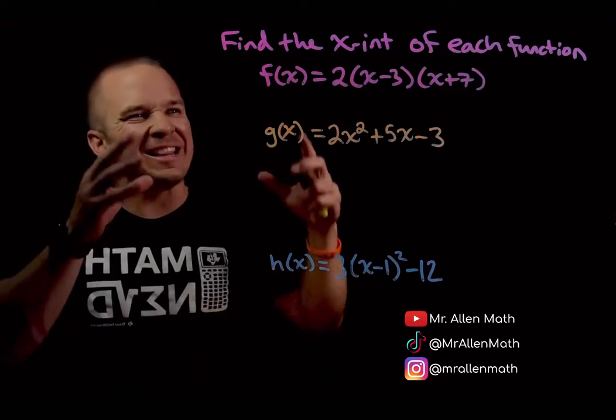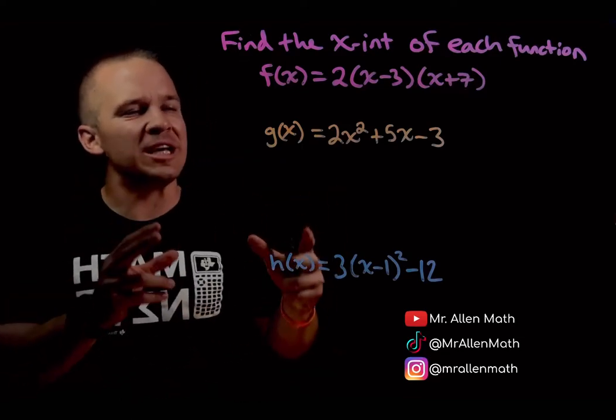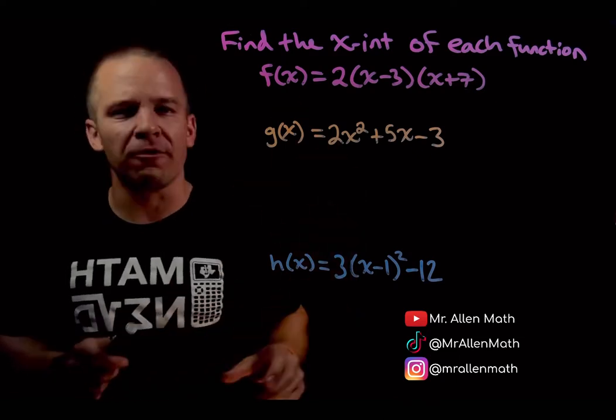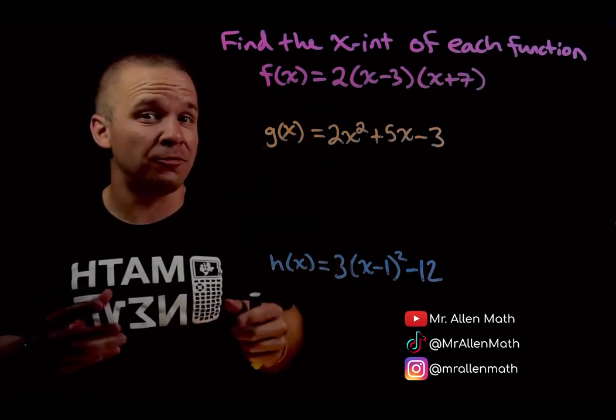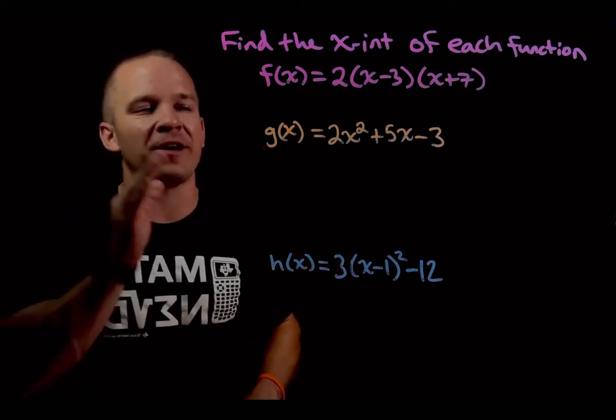What's poppin' dogs? Mr. Allen here. We're about to find the x-intercept of each one of these quadratic functions. They're in different forms. That first one there is in factored form, which is the easiest one to find your x-intercepts.